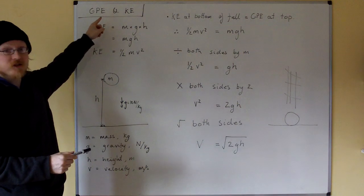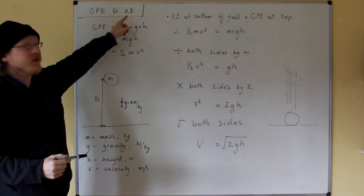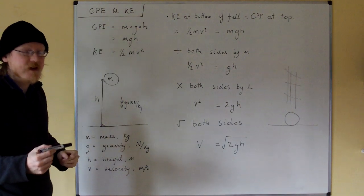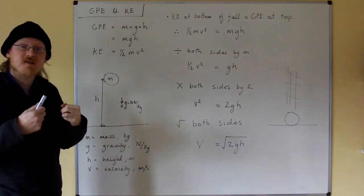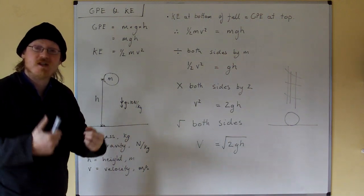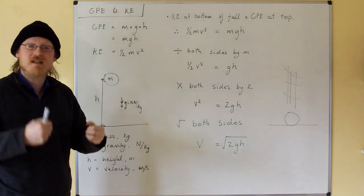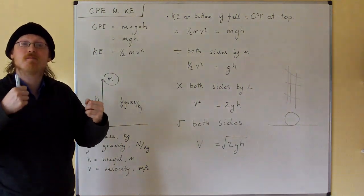Hi. Gravitational potential energy and kinetic energy. Gravitational potential energy is the energy an object has due to its position in a gravitational field. Kinetic energy is the energy an object has due to its motion.